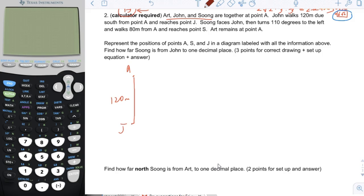Soong faces John, so he's looking that way. And then he turns 110 degrees to the left. 110 degrees is slightly bigger than 90, that's why I drew it as an obtuse angle. And then he walks 80 meters from A and reaches point S. Then I'm going to complete the triangle by drawing that diagonal. It says Art remains at point A. So you have A, S, and J.